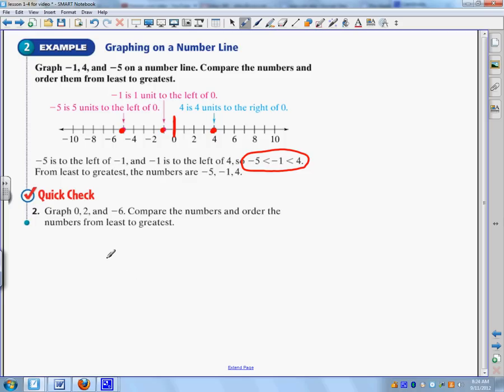All right, so I am going to draw a number line. And I'm going to have 0, 1, 2, 3, 4, 5, 6. And then I'm going to go 6 this way. 1, 2, 3, 4, 5, 6.